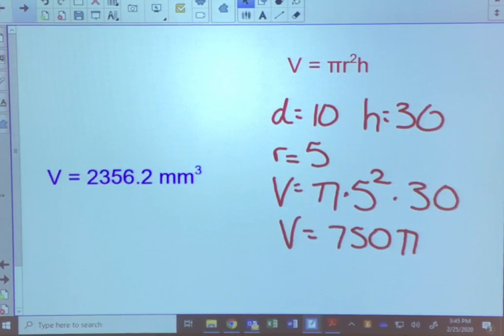So the volume of a cylinder is simply pi times radius squared times the height, and remember to put it in cubic units. If you have any questions, I'll be glad to take them.